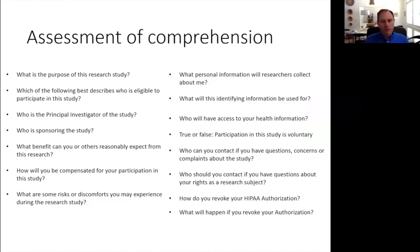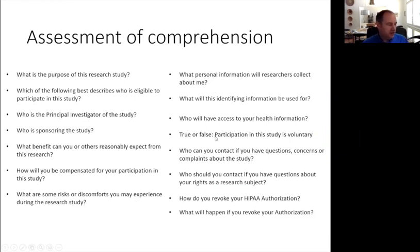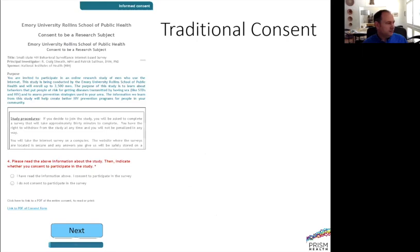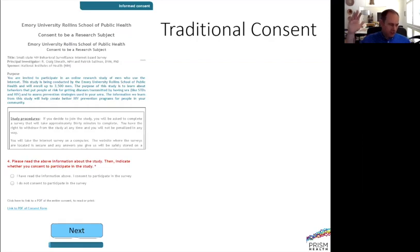In terms of assessing comprehension, we hoped that at the end of an informed consent process, participants would be able to answer: what's the purpose, who's eligible, who's running it, who's sponsoring it, what kind of personal information will be collected, and is participating voluntary. We defined these as core components of understanding what it meant to be in the research study. Up to this point, when we did online surveys, we would put up an informed consent in a scroll box — the whole six-page form — and if you got to the bottom, you said either 'I've read it and want to participate' or 'I don't.'